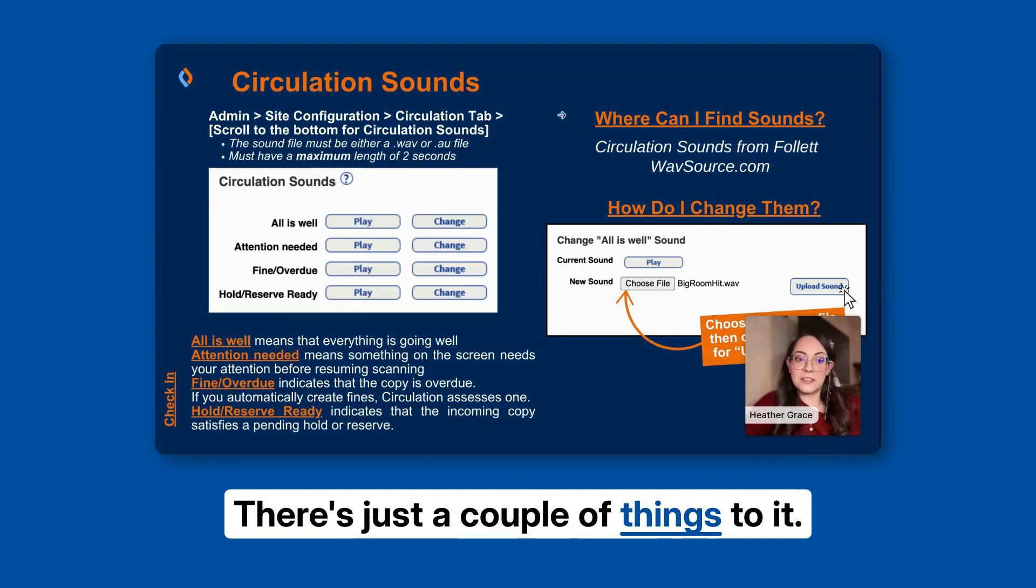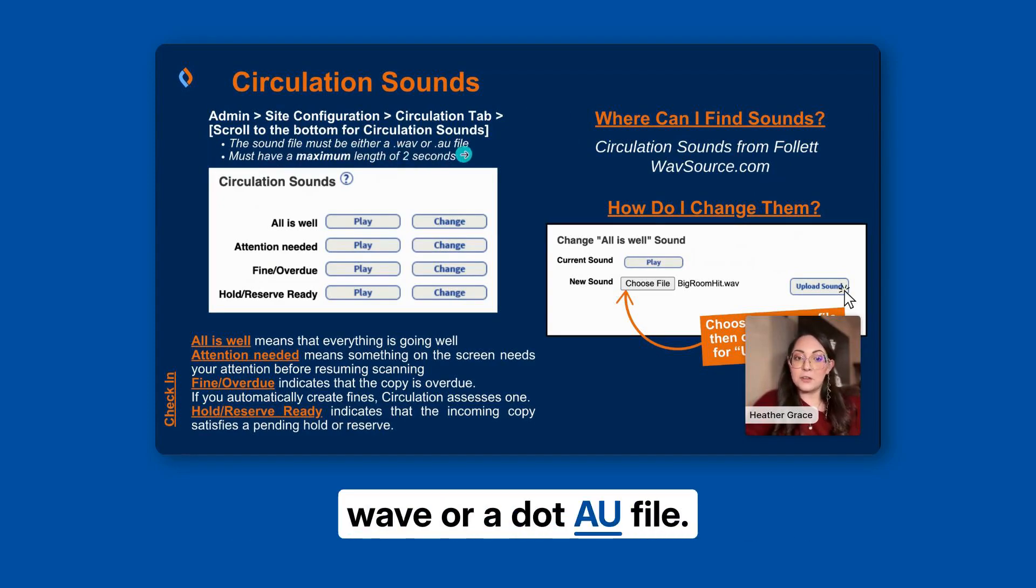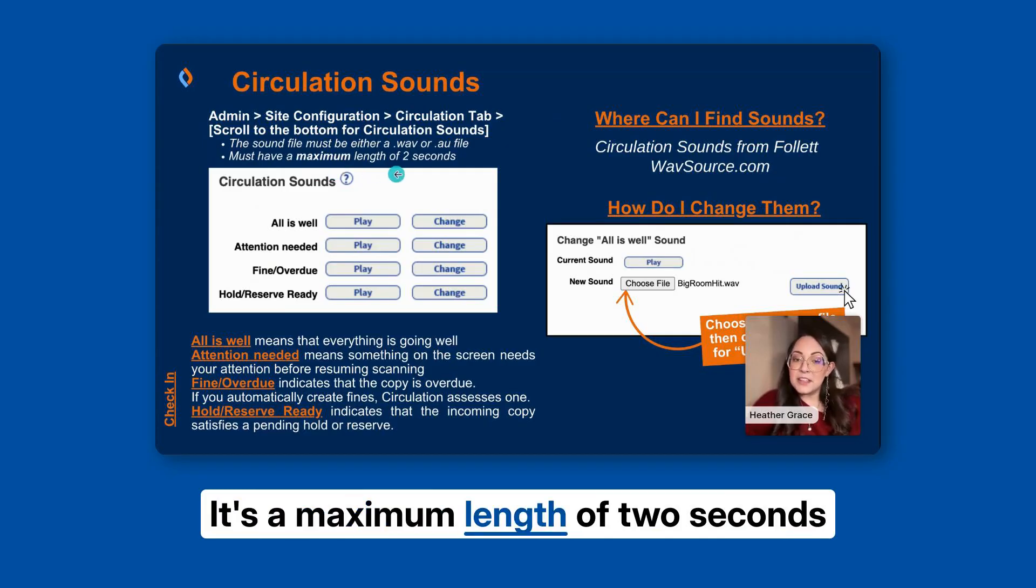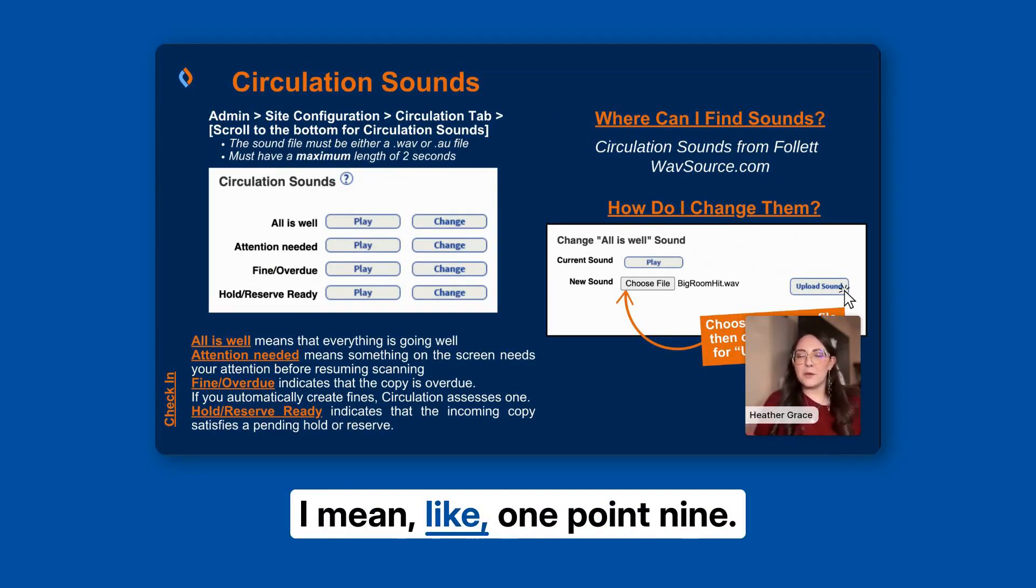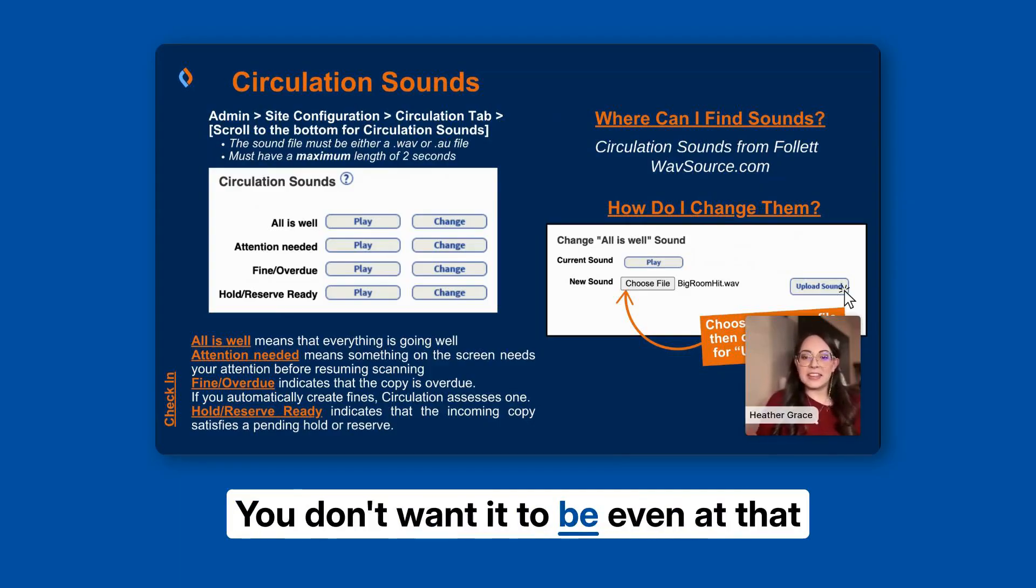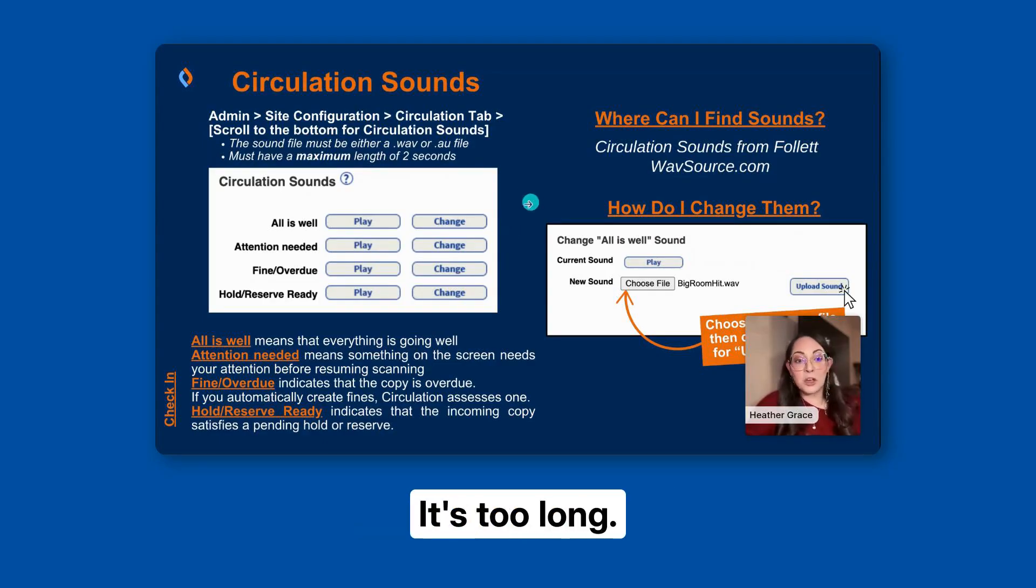There's just a couple of things to it. Your sound has to be either a dot wave or a dot au file. It's a maximum length of two seconds, and not like 2.1 seconds. I mean like 1.9. You don't want it to be even at that two second mark or there's a very good chance that Destiny is going to say no thank you, it's too long.